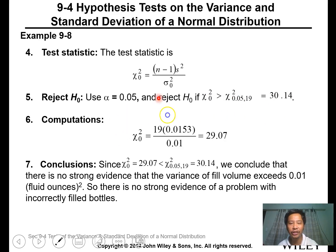We obtain 29.07. Comparing this calculated value to the critical value of 30.59, it is less than. Therefore, we say there is no strong evidence of a problem with incorrectly filled bottles. We fail to reject the null hypothesis.